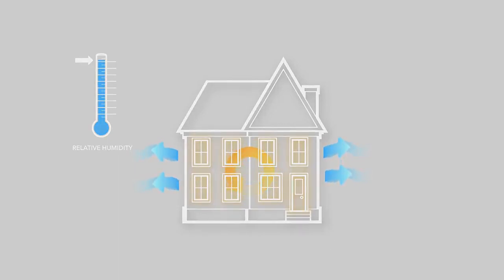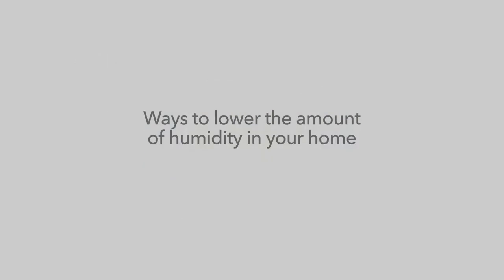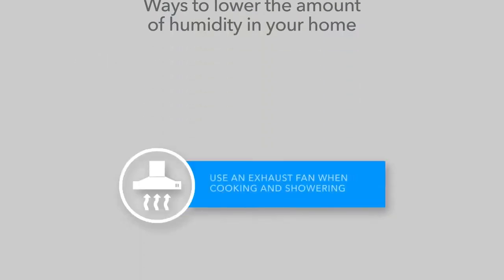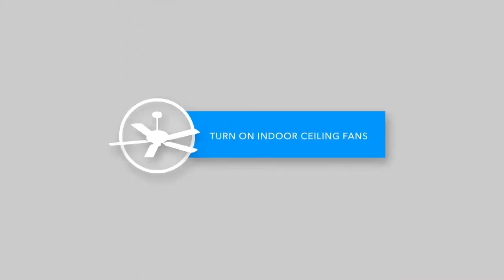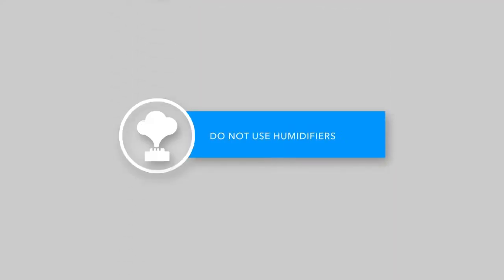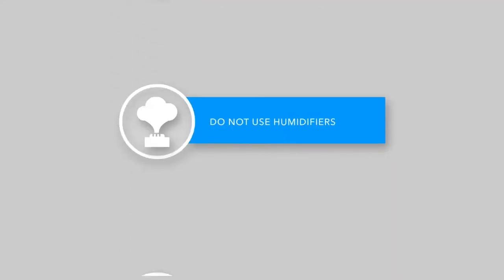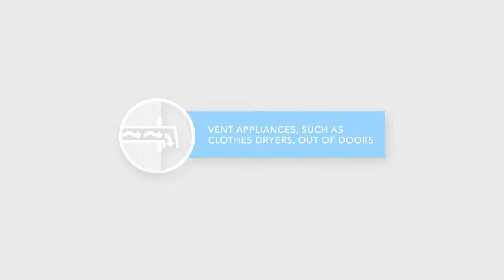To reduce condensation formation, you can lower the humidity in your home in the following ways: use an exhaust fan when cooking and showering, turn on indoor ceiling fans, do not use humidifiers, and vent appliances such as clothes dryers out of doors.